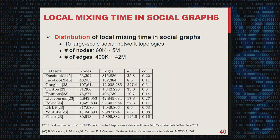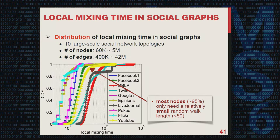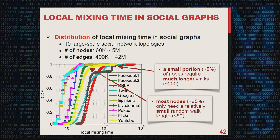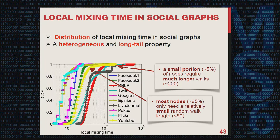We plot the cumulative distribution function of local mixing time across 10 different datasets. Looking at the YouTube dataset, a majority of nodes require only a very short random walk length — around 50. However, a small portion, around 5% of nodes, require a much longer random walk length, up to 200. Similar observations are found across all nine other datasets. We call this the heterogeneous and long-tail property of local mixing time distribution in social graphs. This is why the classical fixed-length worst-case selection method is very inefficient — the majority of nodes do not require such long walks to approach the stationary distribution.